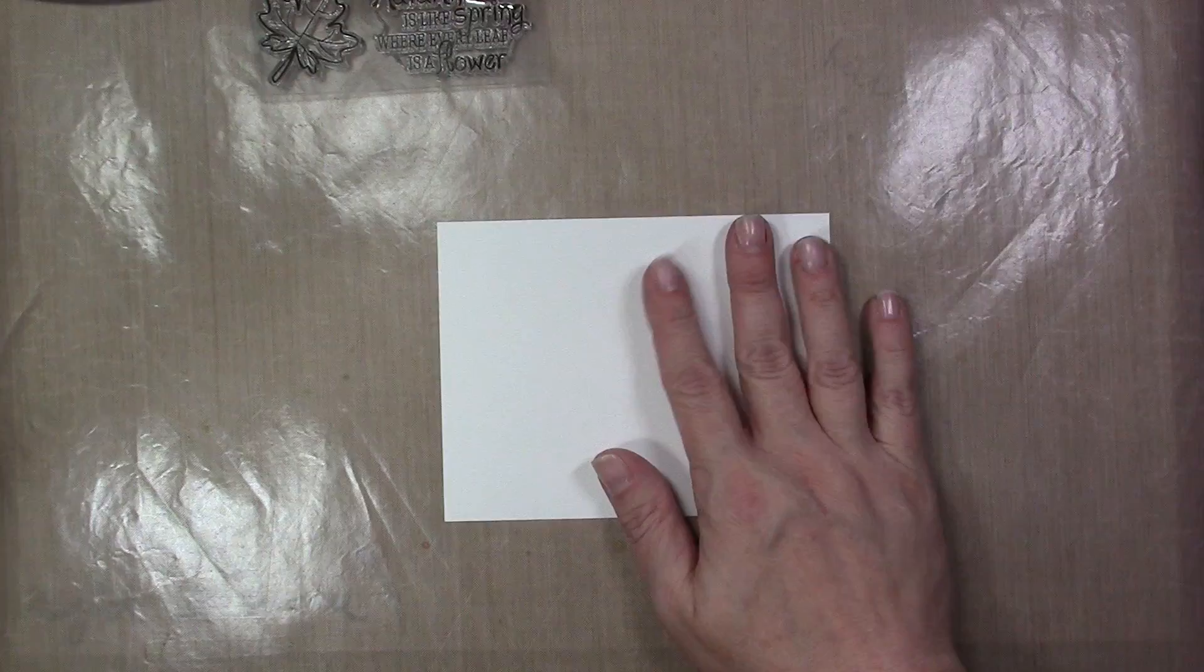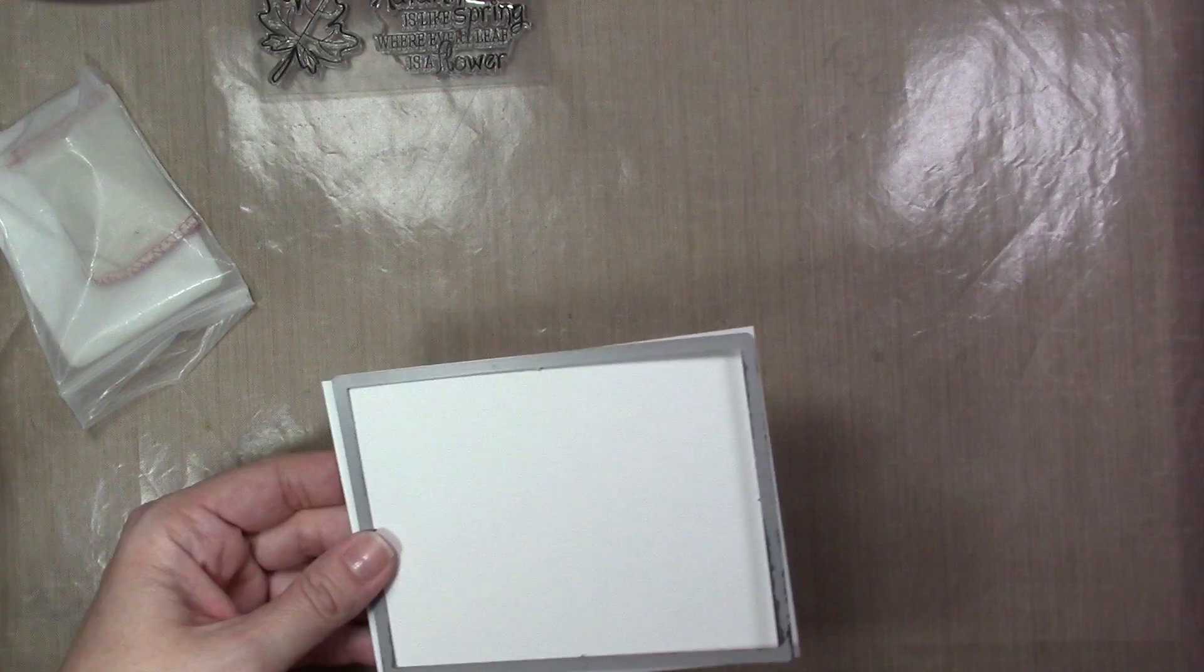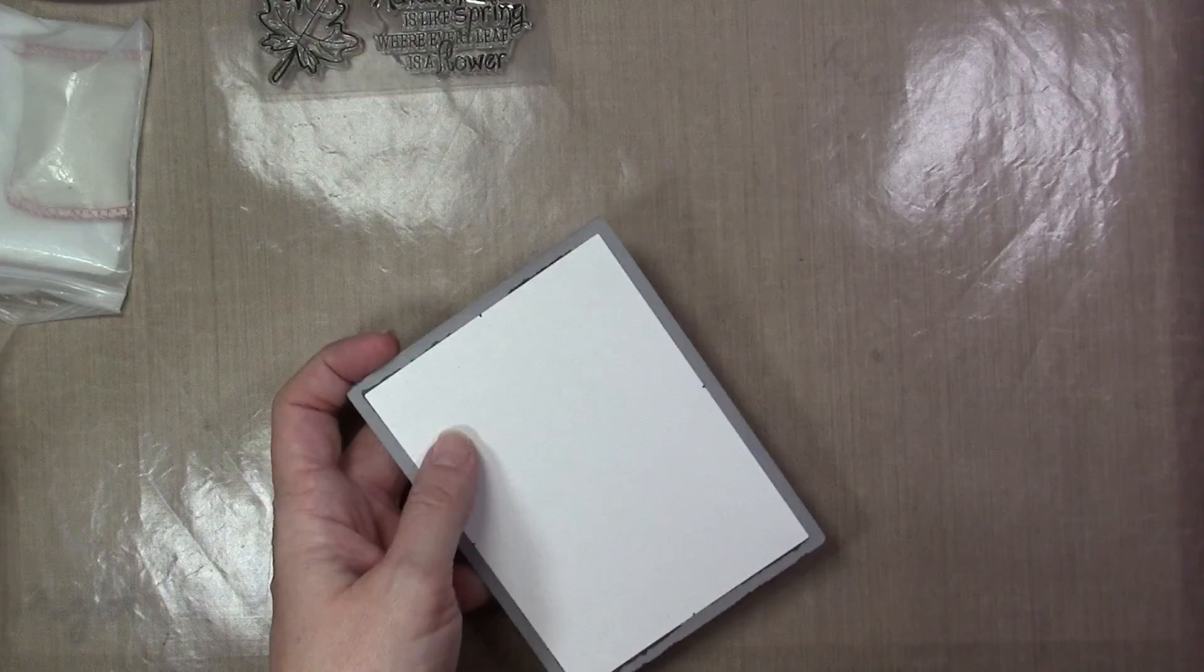We're going to get started with a piece of Bristol cardstock and I'm going to use the largest stitch rectangle die. I'm just going to run that through my Big Shot. After I have that die cut, I'm going to hit it with an anti-static powder bag because I'm going to be doing some heat embossing with some gold embossing powder from WOW.